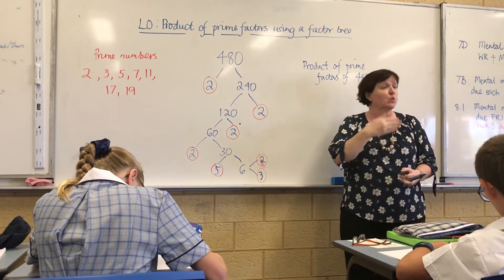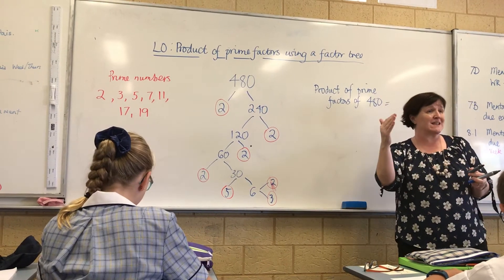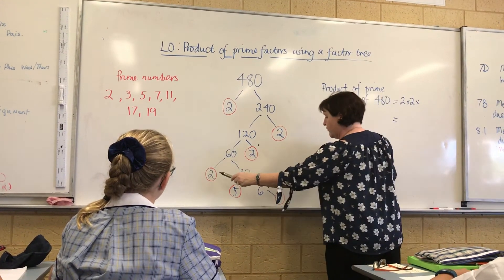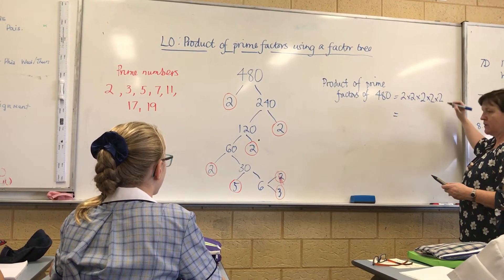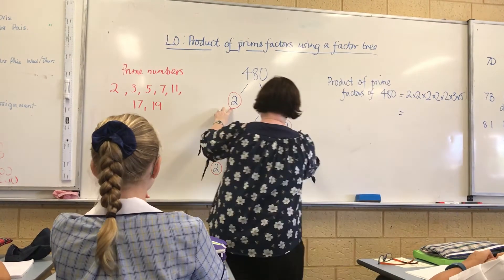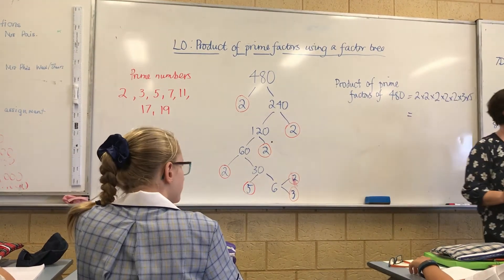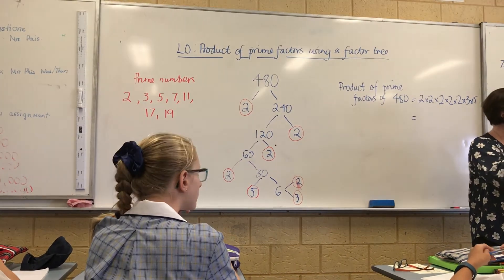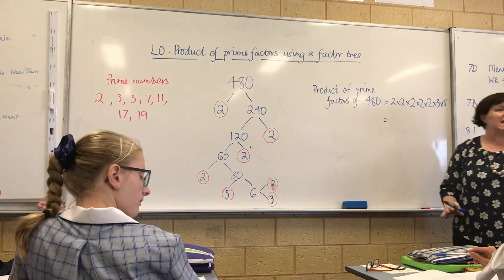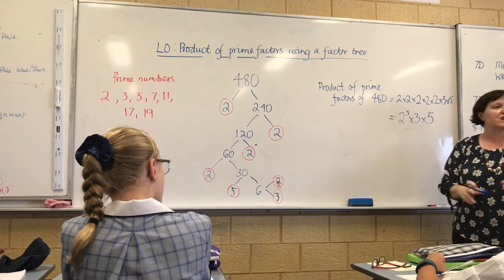They're not necessarily in the same order. The convention is that you write them in ascending order, so look for all the 2's first. Alex says 2 times 2 times 2 times 2 times 2 — let me count: 1, 2, 3, 4, 5 — times 3 times 5. Brilliant. If there are a lot of them, it's not a bad idea to tick them off as you write them down, because it's easy to write 5 when there's 6 or vice versa. In index notation, Bryce says 2 to the power of 5 times 3 times 5 — brilliant.